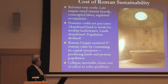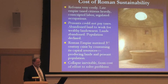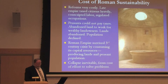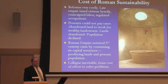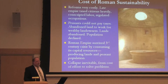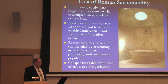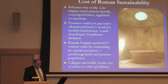Peasants couldn't pay taxes, so often they would abandon their land and go to work for a wealthy landowner who would then protect them. Lands were abandoned, population declined, and the wealthy often got themselves out of paying taxes. So the Roman Empire survived the 3rd century crisis, but it survived by consuming its capital resources, which were producing lands and peasant population. They went from living off interest — yearly agricultural production — to living off their capital, which was the land and the peasants themselves. And so the collapse was inevitable, and the collapse came from the effort to solve their problems.